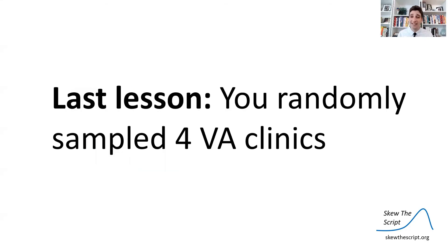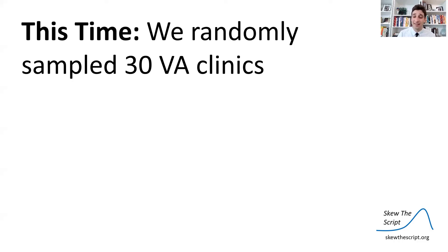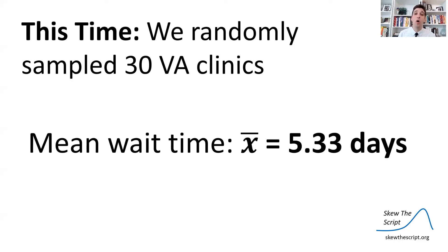Now, last lesson you randomly sampled four VA clinics and got their wait times. This time we're going to randomly sample 30 VA clinics and find their mean wait time. We went ahead and did that, and among the 30 VA clinics we randomly sampled, we found an average wait time of 5.33 days.